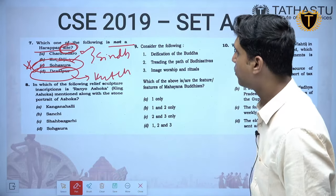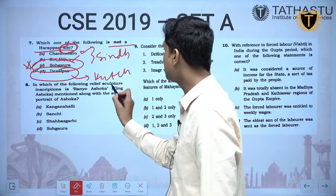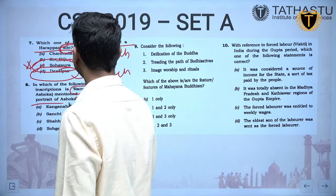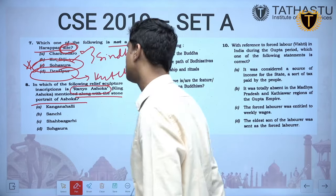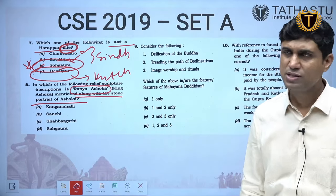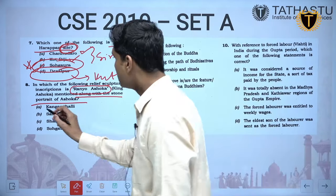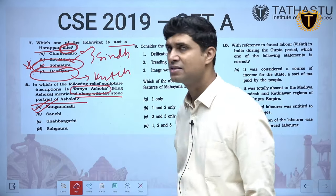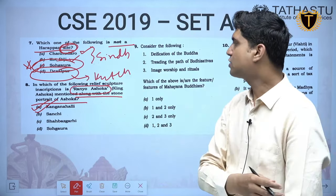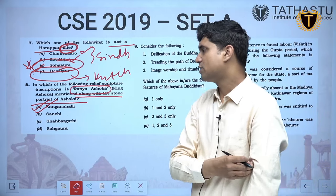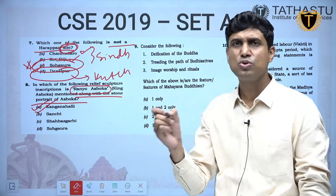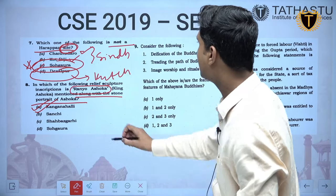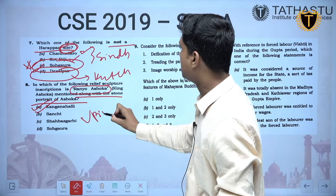In which relief sculpture inscription is 'Ranya Ashoka' mentioned along with a stone portrait of Ashoka? This is a difficult question not given in routine books — it is given in Upinder Singh. Kanganahalli is the place where there is a stone portrait of Ashoka inscribed with 'Ranya Ashoka' meaning King Ashoka.